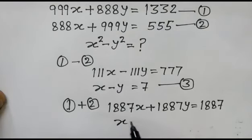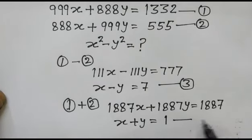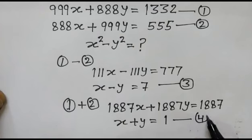If we divide the whole equation by 1887, we get x plus y equals 1, equation number fourth.